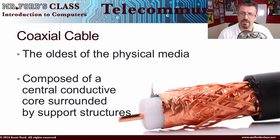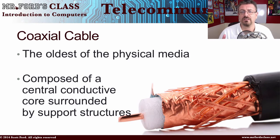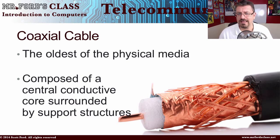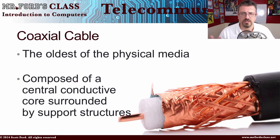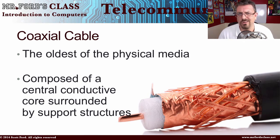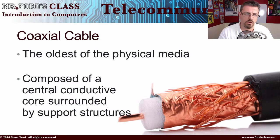Let's begin by looking at one of the oldest ways we can send information — coaxial cable. If you have a television with cable or satellite, you've most likely attached a coax cable to the back of it. It's composed of a central conductive core — usually copper — surrounded by support structures. Those structures are there to prevent signal loss, because when you move electricity along copper cable you can lose information over time, experience noise, and signal degradation. Everything surrounding that central core helps ensure the signal stays true to what was sent.